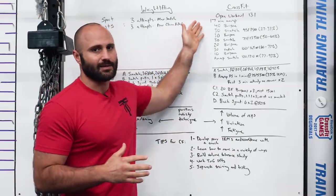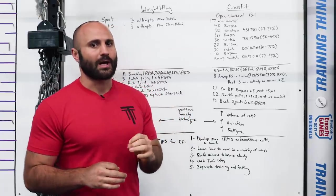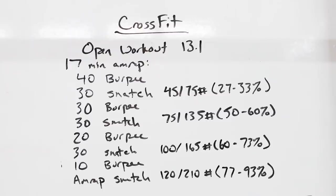If we contrast that to what a test looks like in the sport of CrossFit, I'm going to use CrossFit Open Workout 13.1 as an example. You have 17 minutes to complete as many reps as possible through going through this sequence. 40 burpees, 30 snatches. The weight for the first 30 snatches is 45 pounds for the females, 75 for the males.